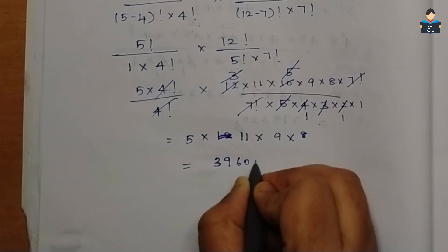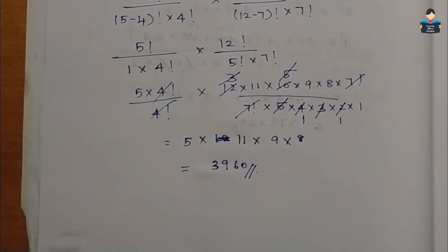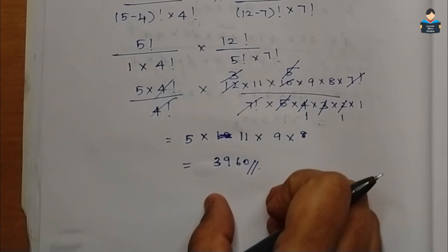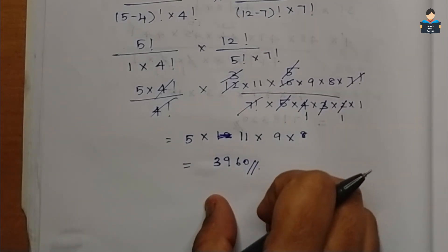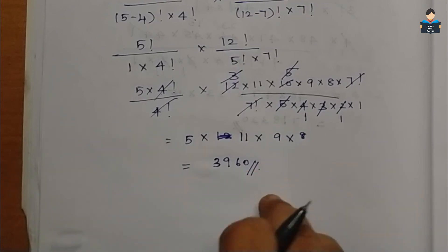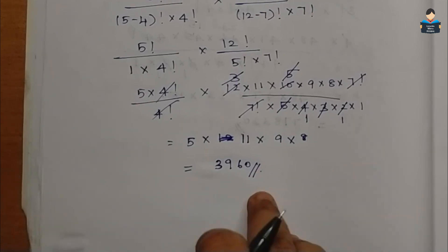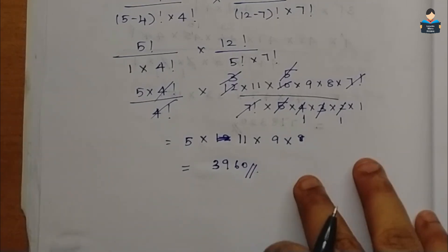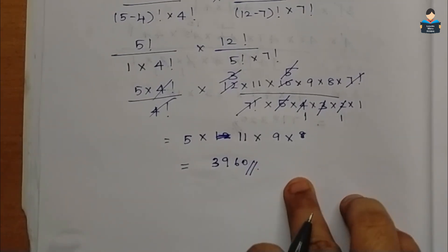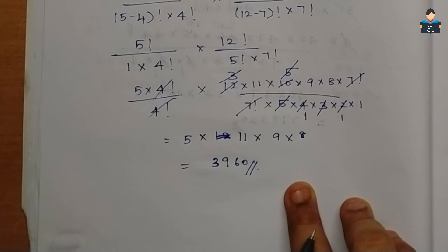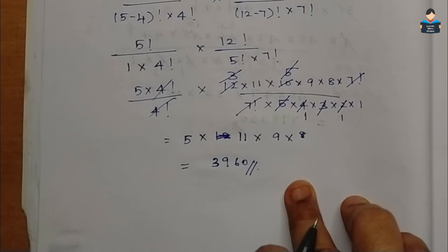The final answer is 3,960 ways. That is the answer to Question 7. Now Question 8.